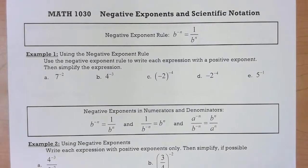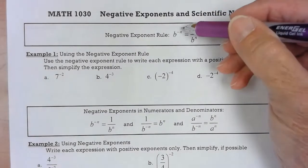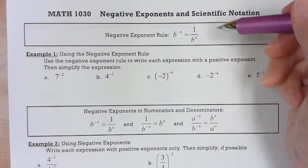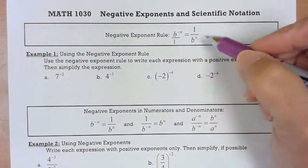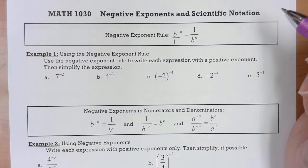So the negative exponent rule: if I've got b to the negative n, that's equal to its reciprocal, and if you get the reciprocal of that it becomes a positive exponent.